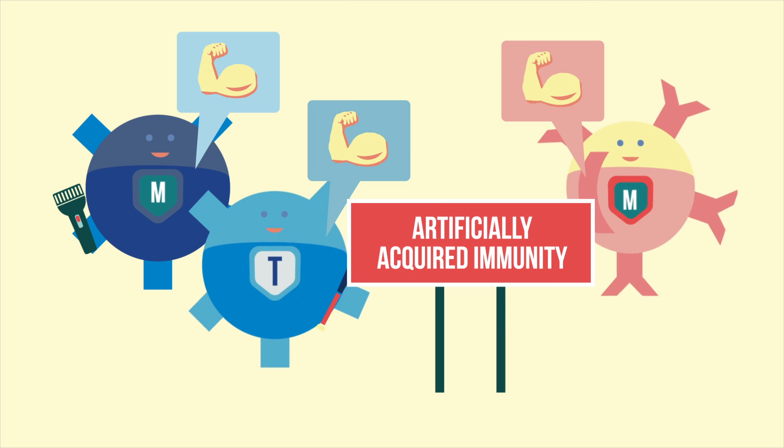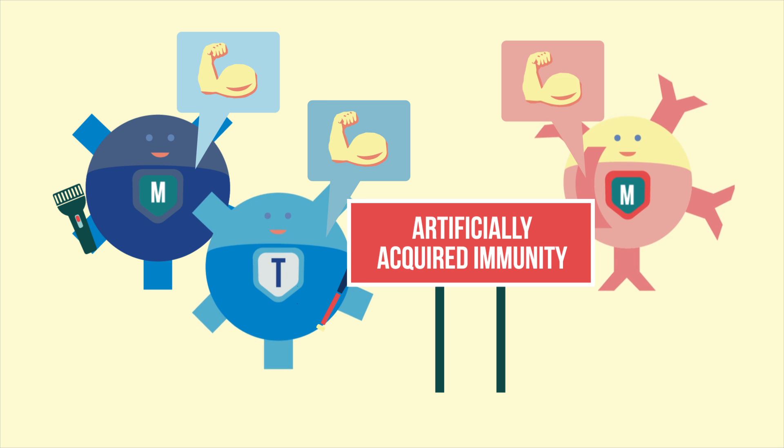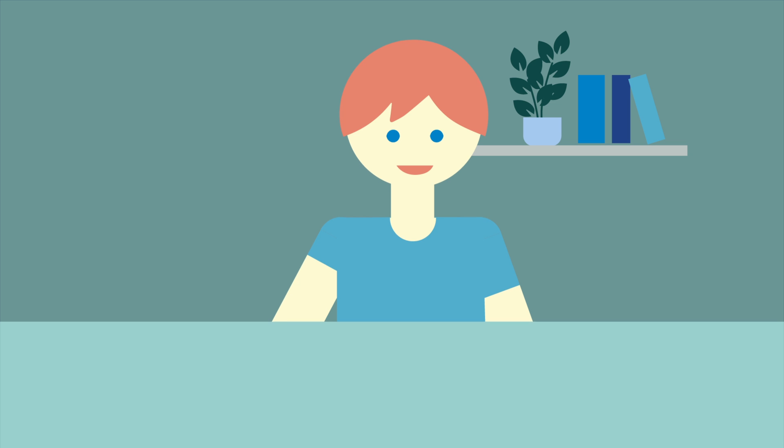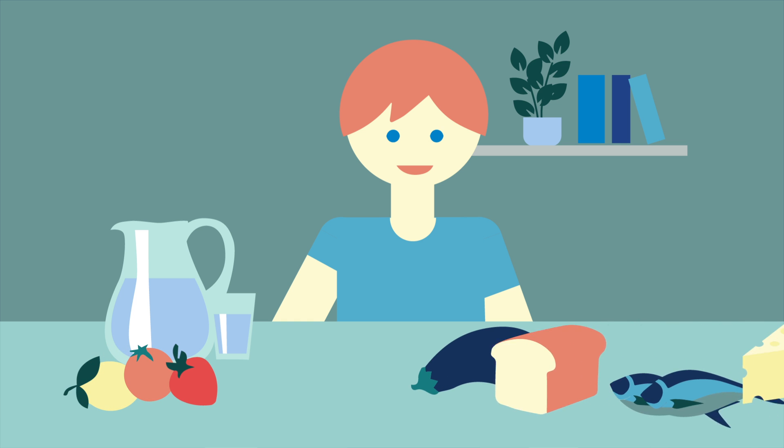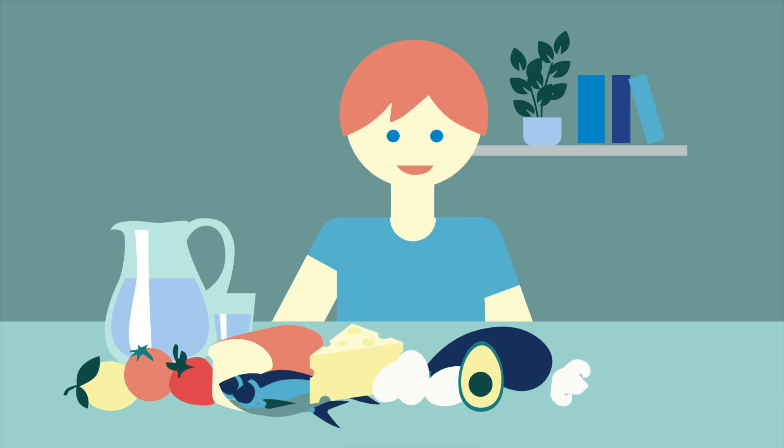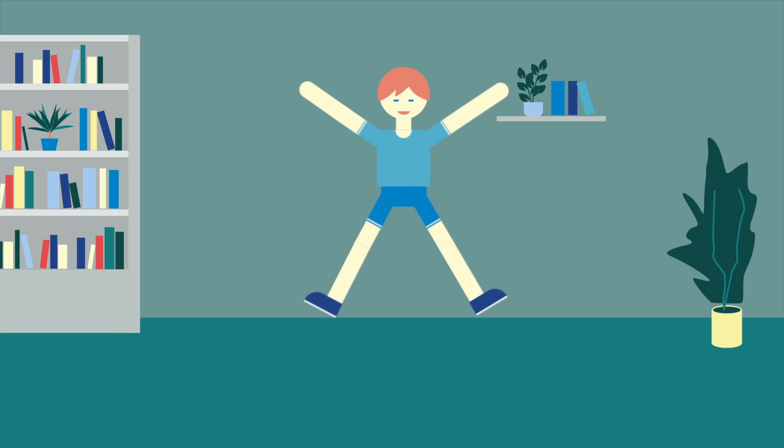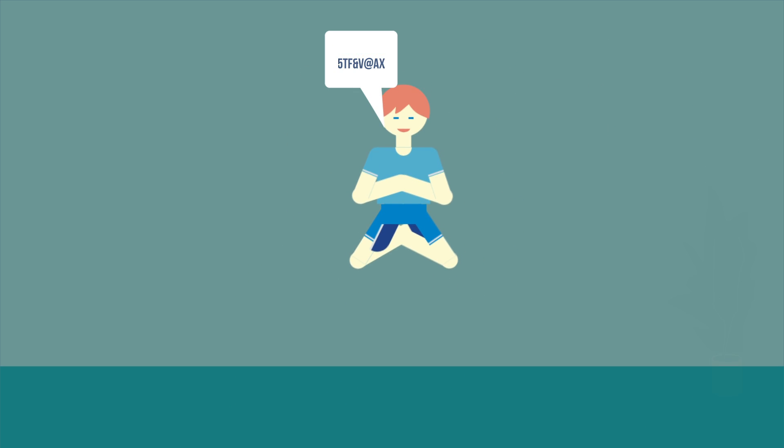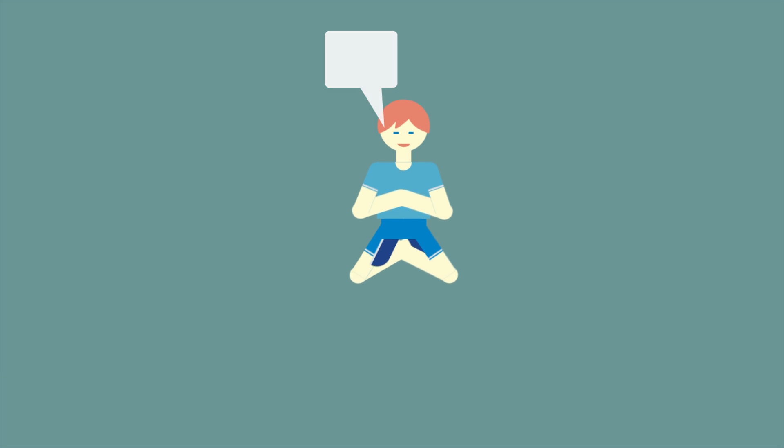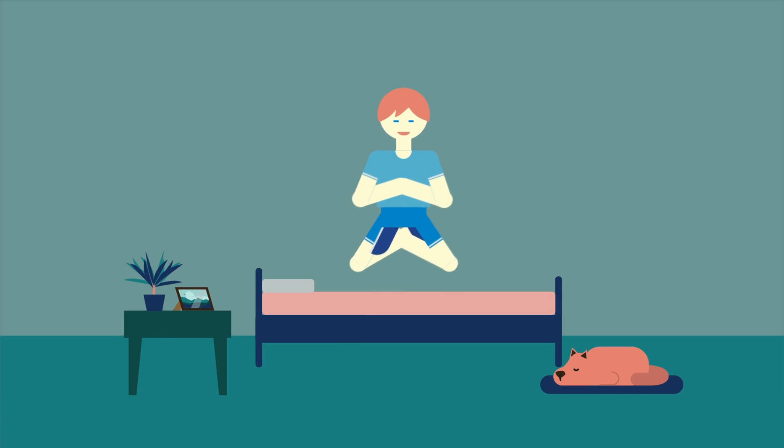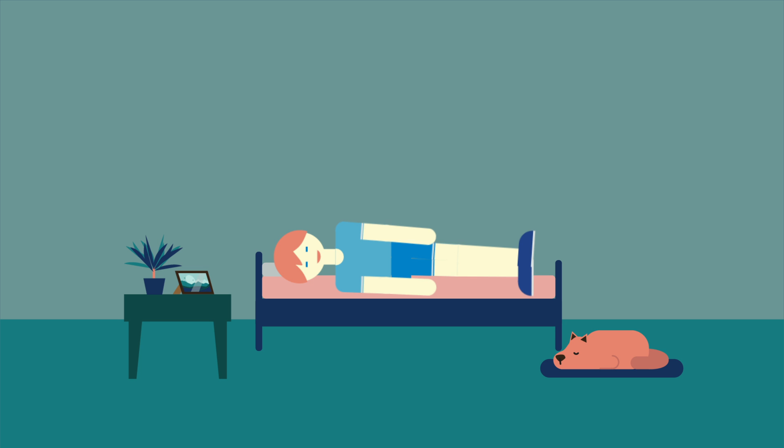There is also a lot we can do ourselves to strengthen our immune system. One of the most important is to drink a lot of liquids and to eat a balanced diet containing an appropriate amount of vitamins and minerals. In addition, regular exercise, avoiding lasting stress, and getting restful sleep all help keep the immune system balanced and in working order.